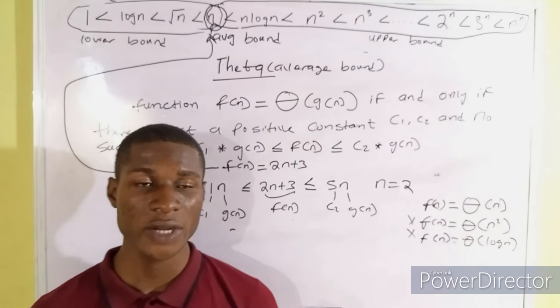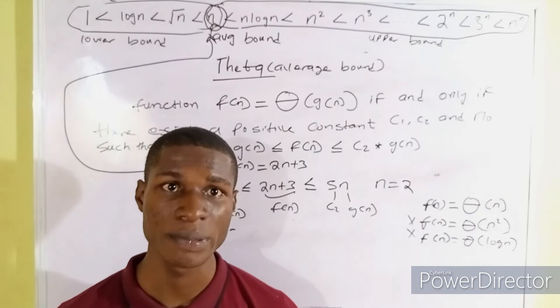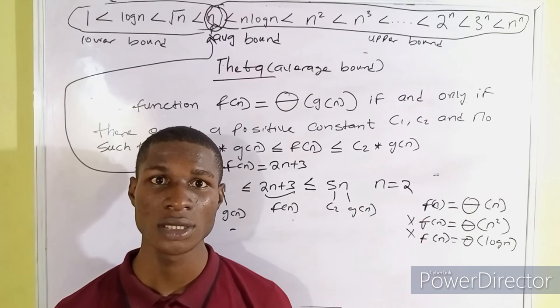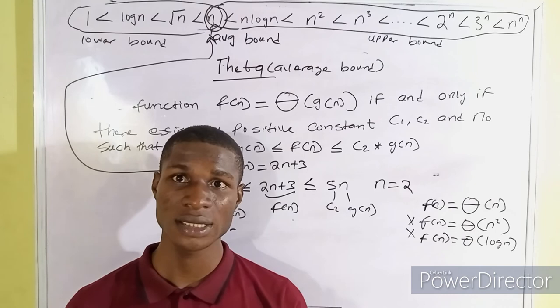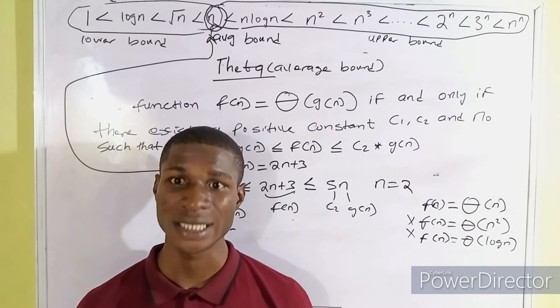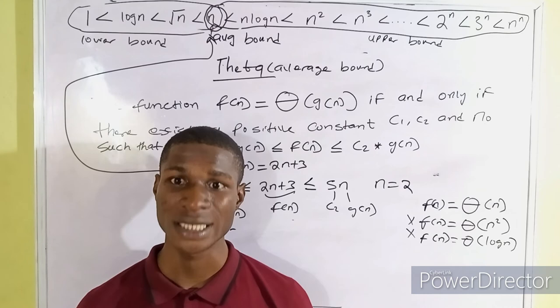I want to make a very important correction here. Most articles say that Big O represents worst case, Theta represents average case, and Big Omega represents best case — that is totally wrong. Case analysis is something different, and in the next tutorial I will be explaining the case analysis of a data structure. That is very important because there is a lot of confusion around that.